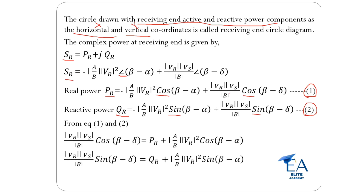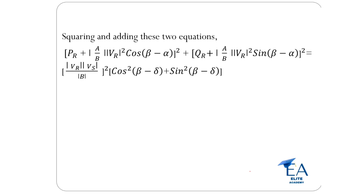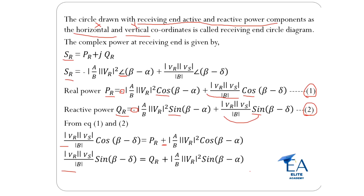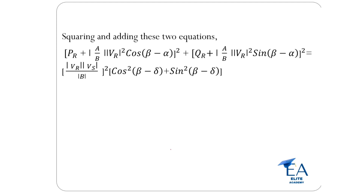Now from equations 1 and 2, just rearrange these two equations. Take the |Vr||Vs|/B term to the LHS side. So here a minus sign is there, that's why: PR plus mod(A/B)|Vr|² cos(beta minus alpha), and QR plus mod(A/B)|Vr|² sin(beta minus alpha). We got these two equations — now square and add them.